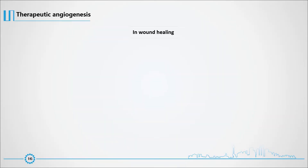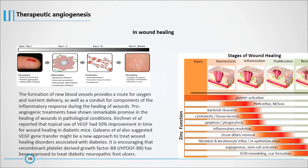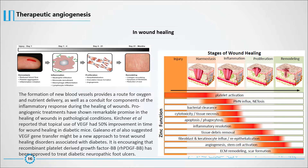The formation of new blood vessels provides a route for oxygen and nutrient delivery, as well as a conduit for components of the inflammatory response during the healing of wounds. Pro-angiogenic treatments have shown remarkable promise in the healing of wounds in pathological conditions. Kirchner et al. reported that topical use of VEGF had a 50% improvement in time for wound healing in diabetic mice. Galeano et al. also suggested VEGF gene transfer might be a new approach to treat wound healing disorders associated with diabetes. Recombinant platelet-derived growth factor BB (rhPDGF-BB) has been approved to treat diabetic neuropathic foot ulcers.